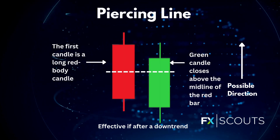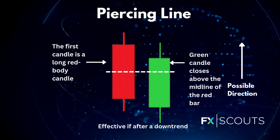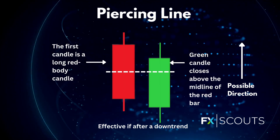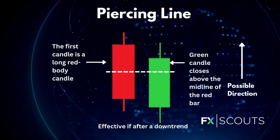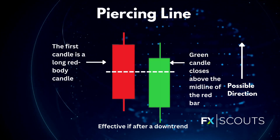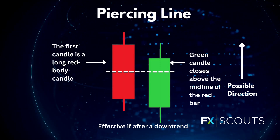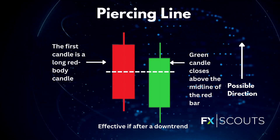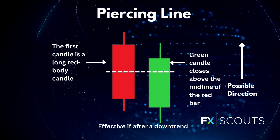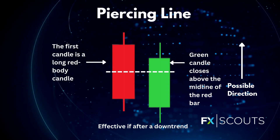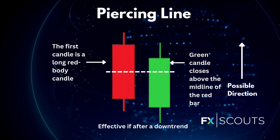Then you get the piercing line. It is also a two-stick pattern made up of a long red candle followed by a long green candle. There is usually a significant gap down between the first candlestick's closing price and the green candle's opening price. It indicates a strong buying pressure as the price is pushed up to or above the mid price of the previous day.